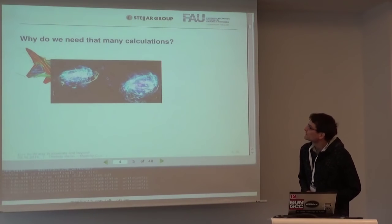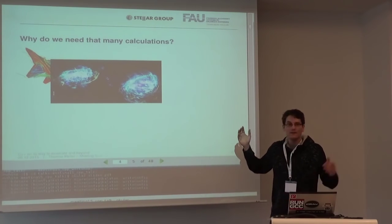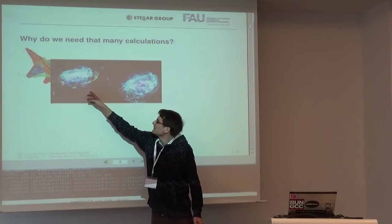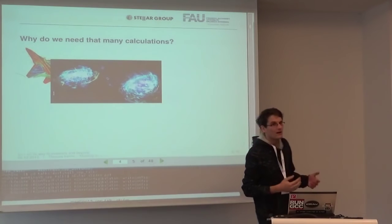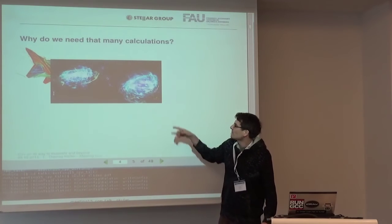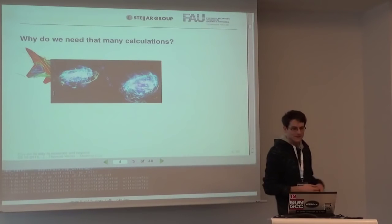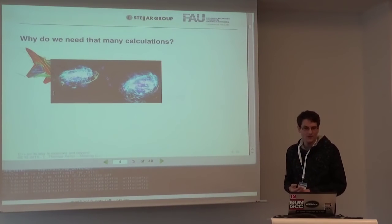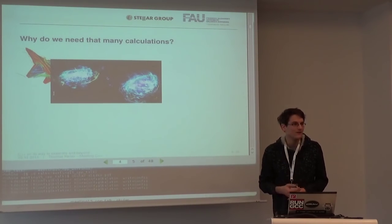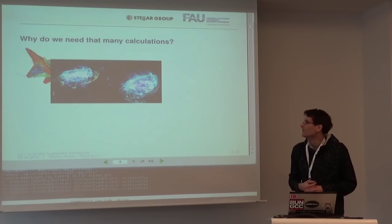Another nice example is astrophysics. This example is colliding two galaxies — you have two big galaxies with a million stars in each. Each star is, simplified, one particle, and you do a so-called n-body simulation. Each particle needs to know the gravitational force of every other particle in the system, so that's a huge calculation. In order to understand better what's going on, we need bigger machines to increase the resolution.